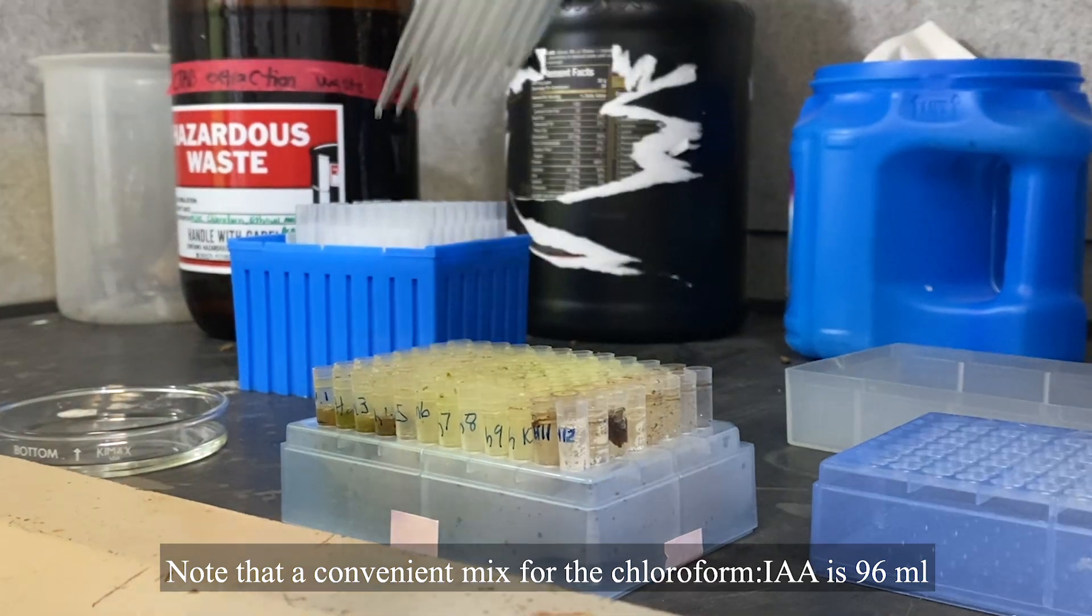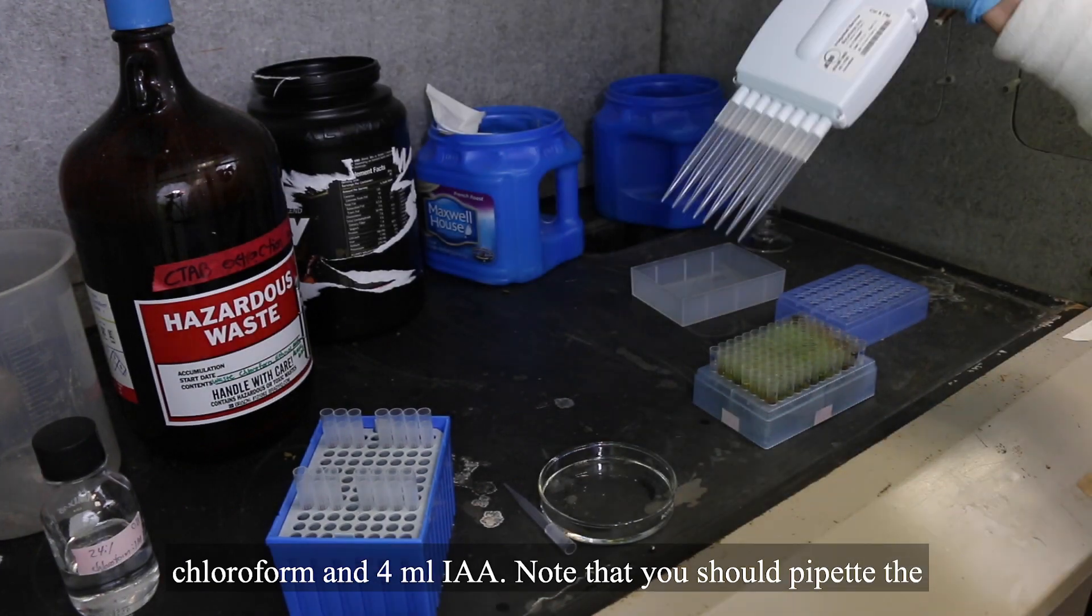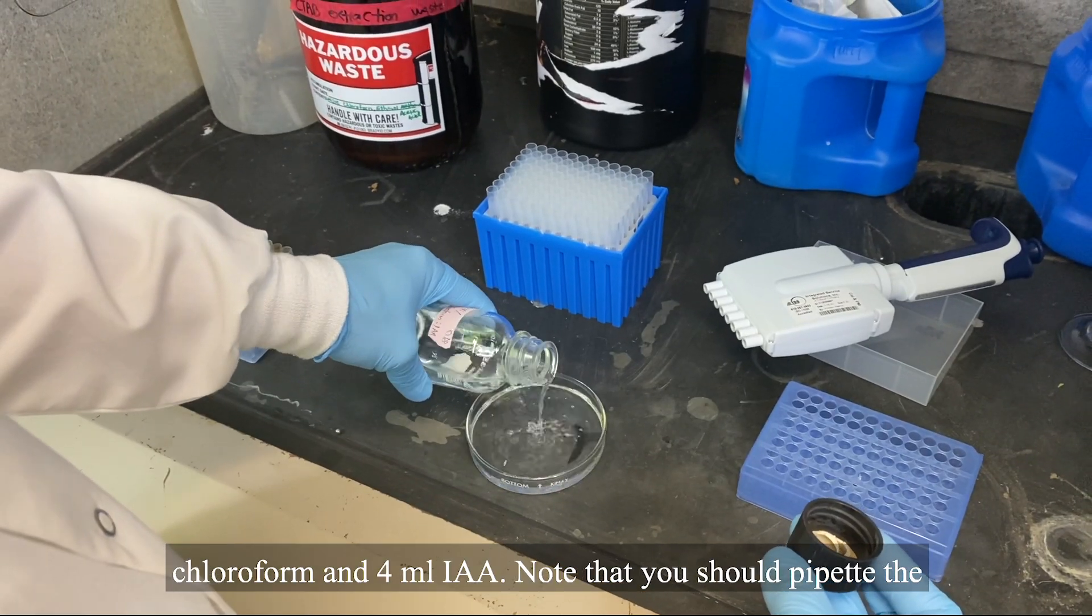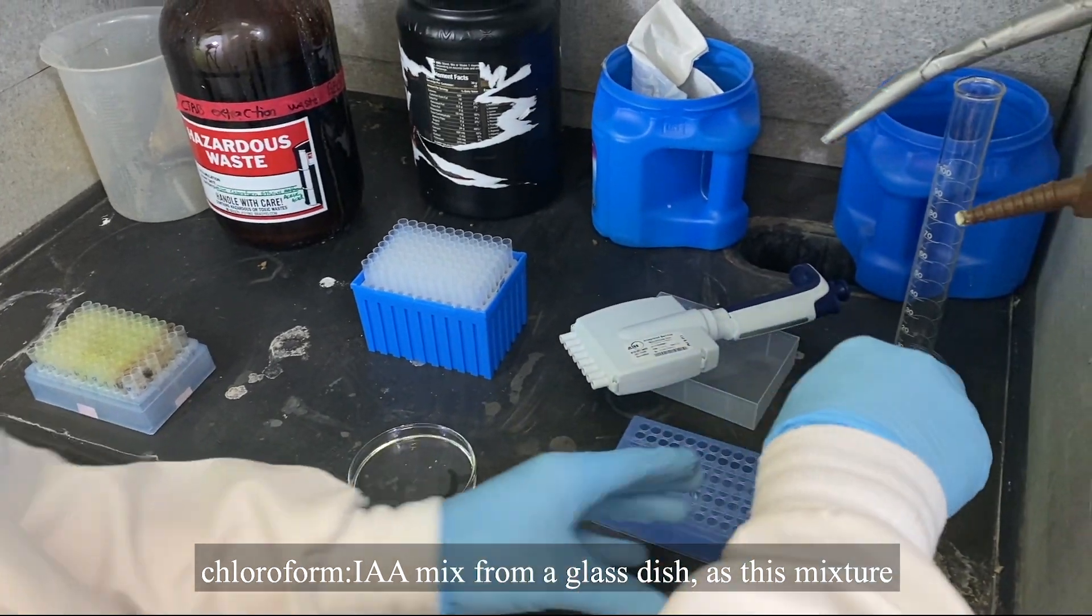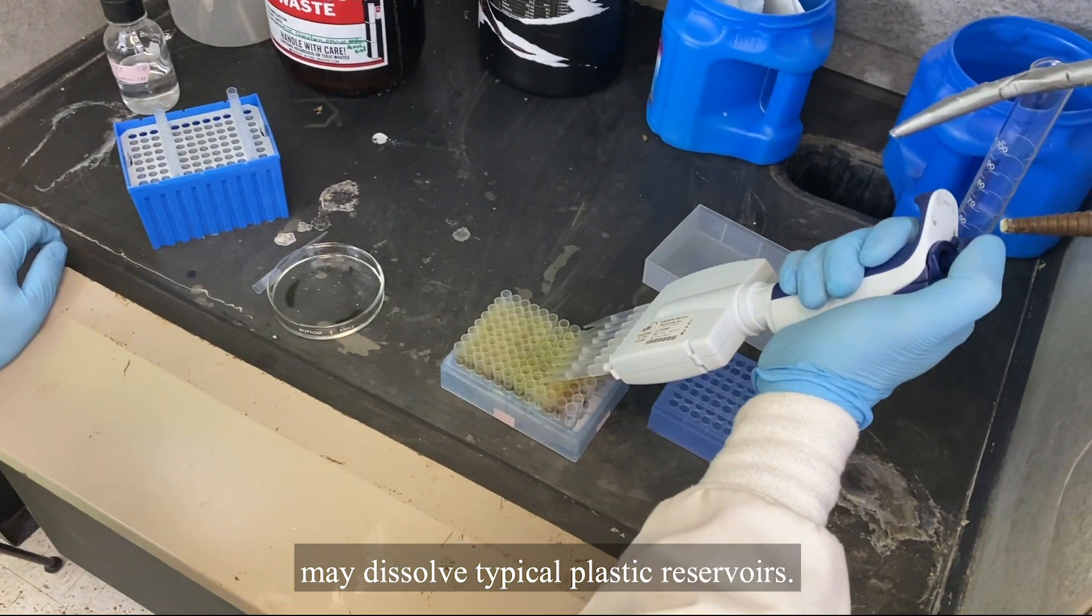Note that a convenient mix for chloroform isoamyl alcohol is 96 ml chloroform and 4 ml isoamyl alcohol. Note that you should pipette the chloroform isoamyl alcohol mix from a glass dish, as this mixture may dissolve typical plastic reservoirs.